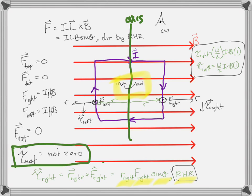The simplest kind of electric motor: let the loop start in this orientation, let it go. It's going to go 90 degrees and then start to slow down, but it's going to go past 90 degrees — it'll go 180 degrees and stop. But sometime in that second half of the motion, flip the current. Now it's still pushed in that downward, clockwise direction. If you flip the current every half turn, the thing keeps rotating. This is a standard motor.